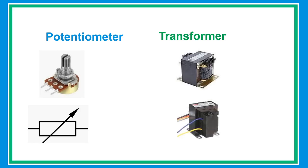A potentiometer is a three-terminal resistor in which resistance is manually varied to control the flow of electric current. A transformer is a passive electrical device that transfers electrical energy from one electrical circuit to another or multiple circuits.